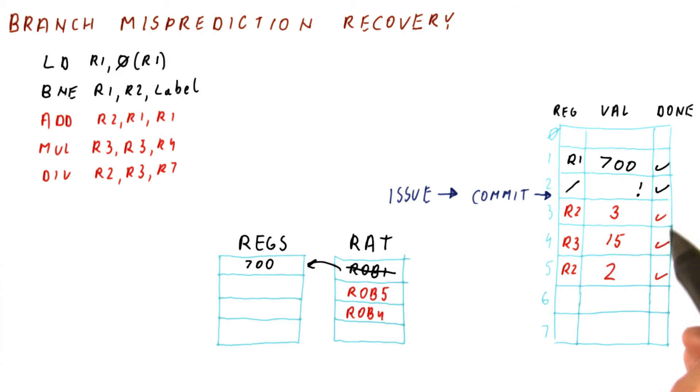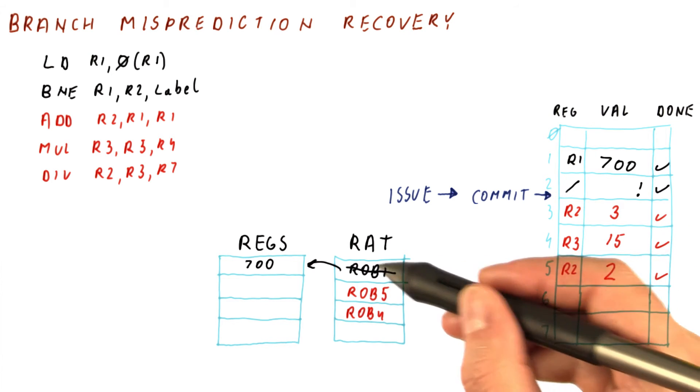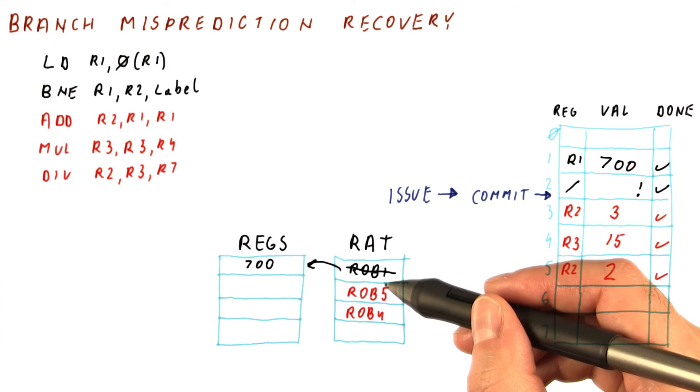We, of course, as we issue them, unmark this done bit. Also, the RAT now contains the wrong values. But the question is, what are the right values for the RAT?